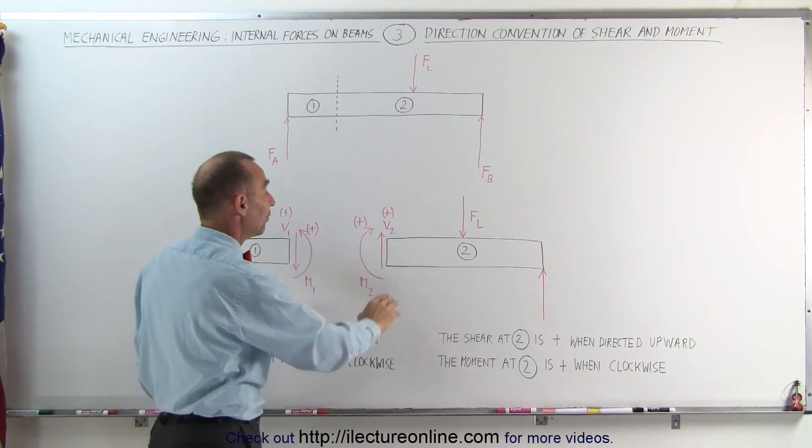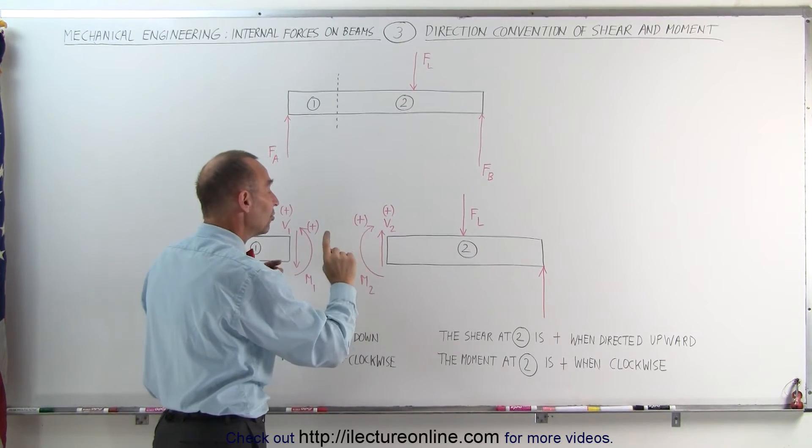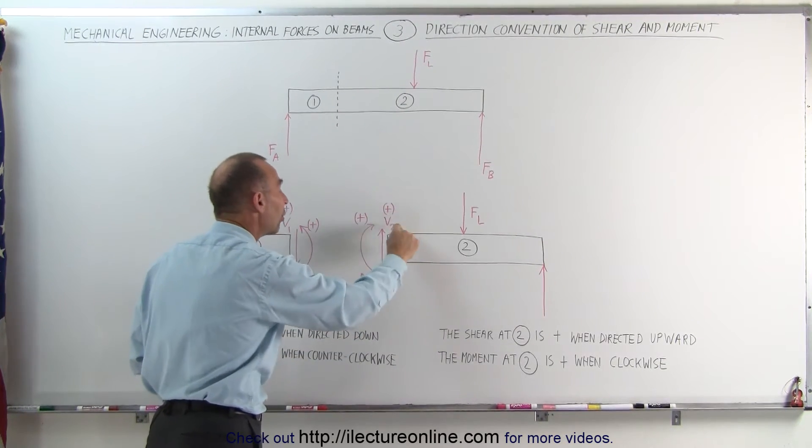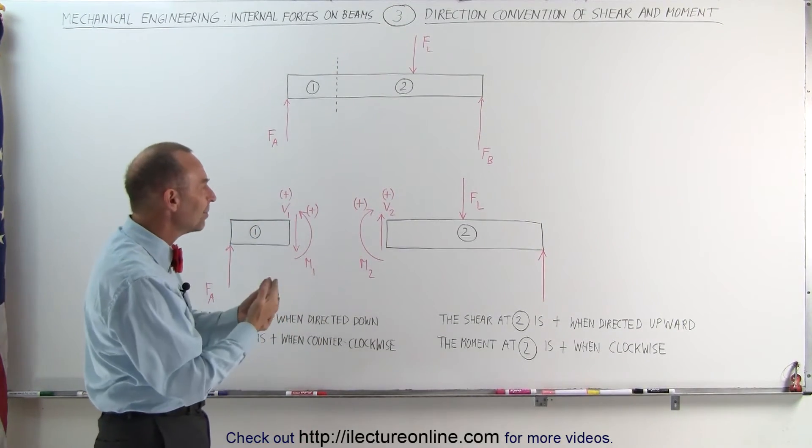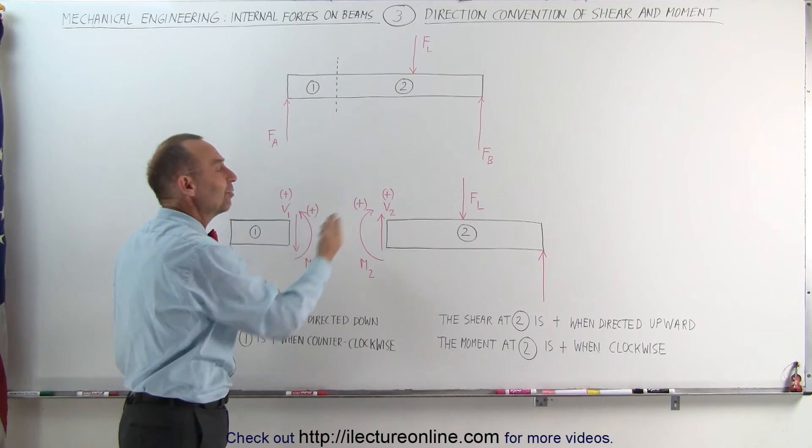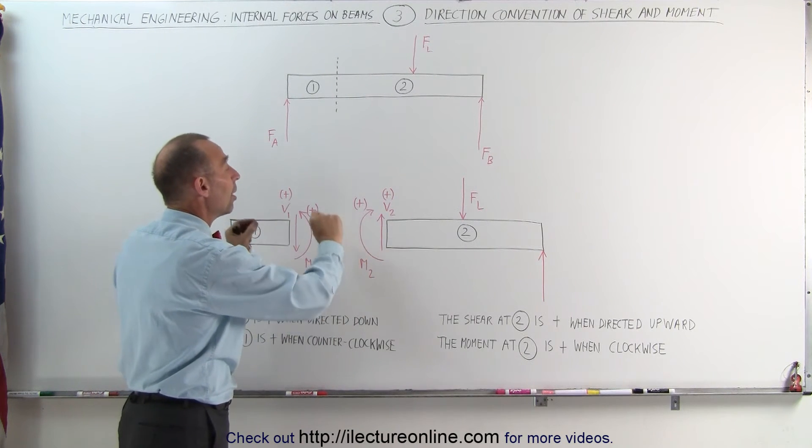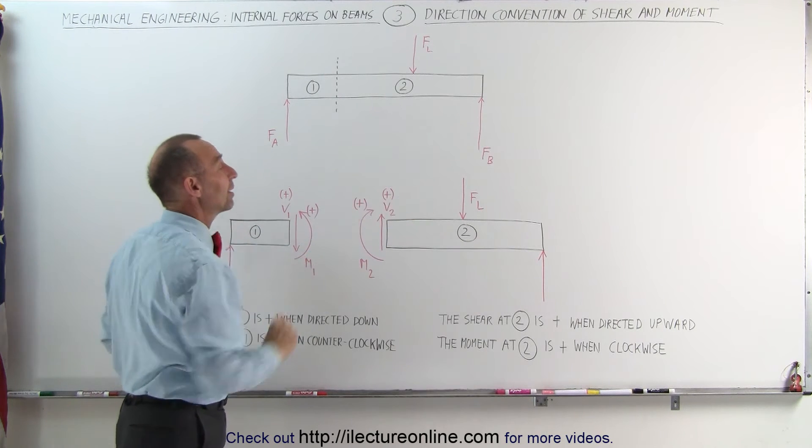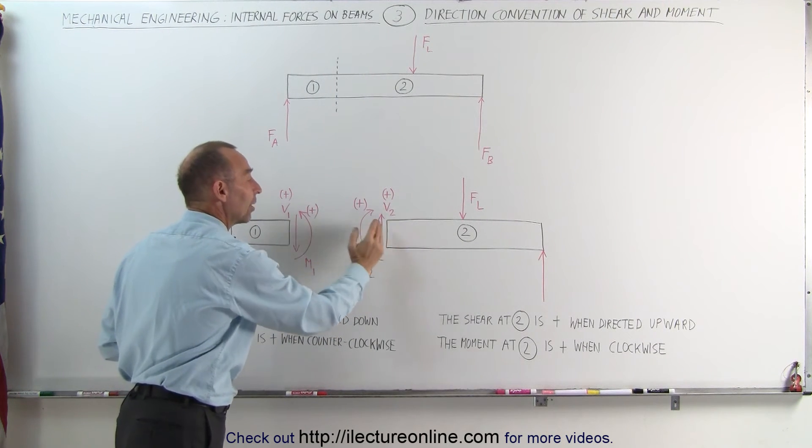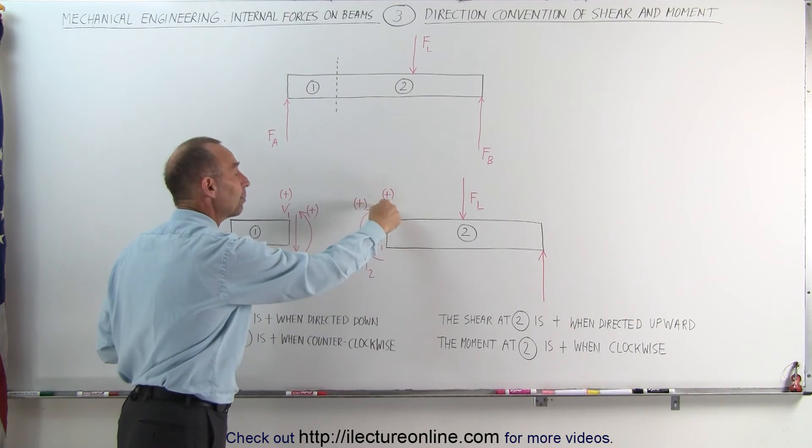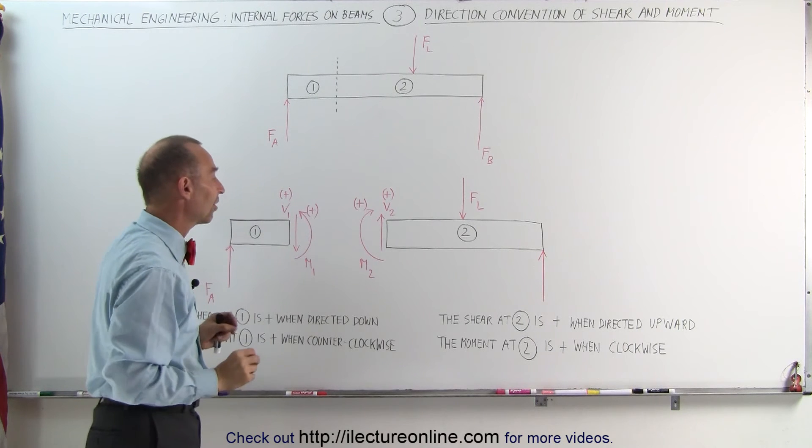But on the right side, if we take a look at the moment on the beam on the right side, notice that the convention says that if the moment is clockwise, it's positive. And that's why it's often confusing, because we tend to think of clockwise being negative moment. But when we talk about the internal moment of the beam, opposing the moments caused by the external forces, we call the moment on the right beam right here, on this segment on the right beam, we call that positive when it's clockwise. We call this positive when it's counterclockwise on the left segment.